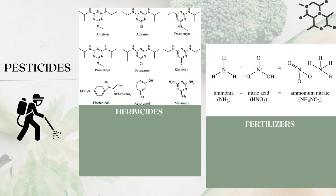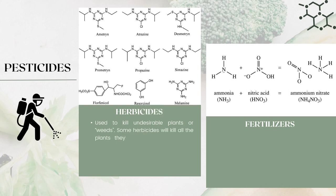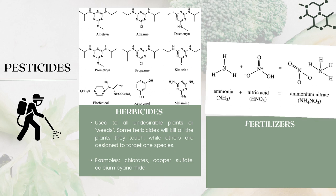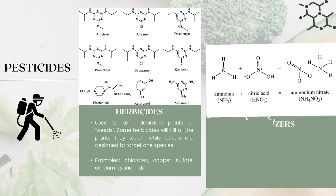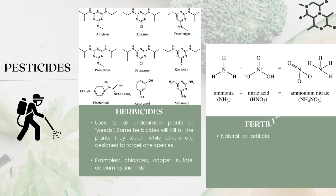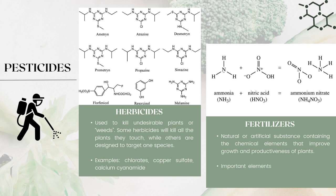For herbicides, they are used to kill undesirable plants or weeds. Some herbicides will kill all the plants they touch, while others are designed to target one species. The important components are chlorates, copper sulfate, and calcium cyanamide. The last type of pesticide is fertilizers — natural or artificial substances containing chemical elements that improve the growth and productivity of plants. The important elements needed are nitrogen, phosphorus, and potassium.